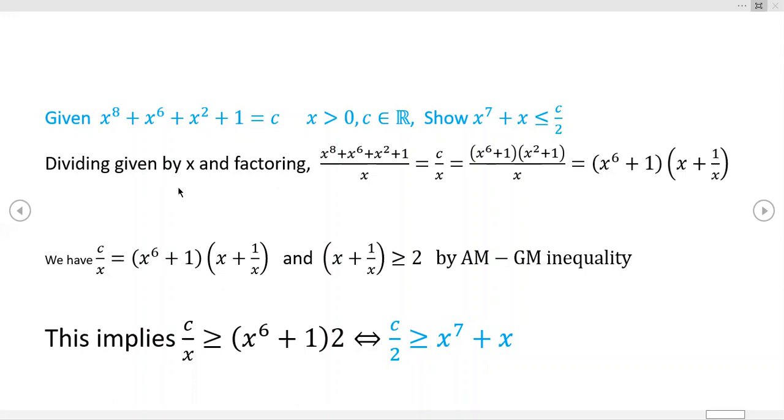So let's go ahead and get busy establishing the truth of this inequality. Now, this first statement right here is motivated by the fact that we're trying to prove an inequality that involves x to the seventh. So this is degree eight. So dividing through by x makes quite a bit of sense. Also right here, this is just the factorization. You can check it out. x to the sixth plus one quantity times x squared plus one quantity is actually this guy right here.